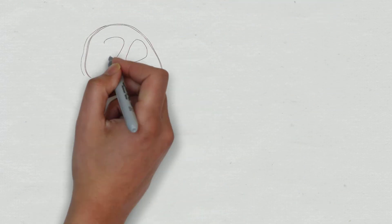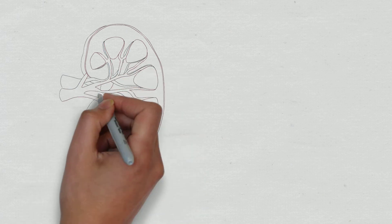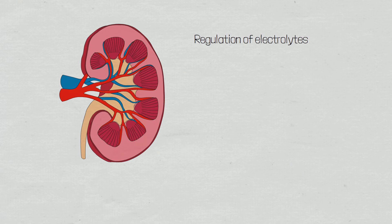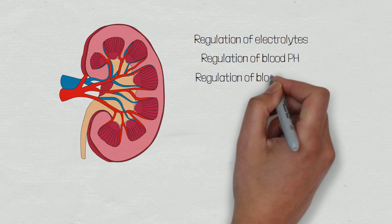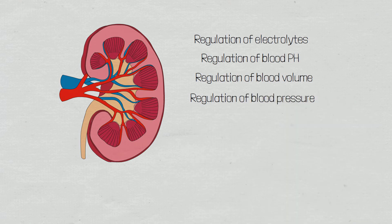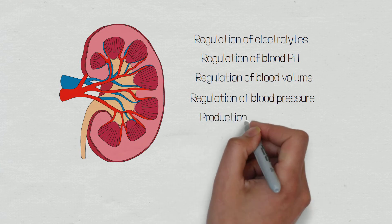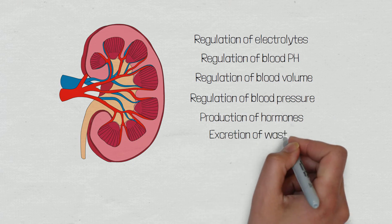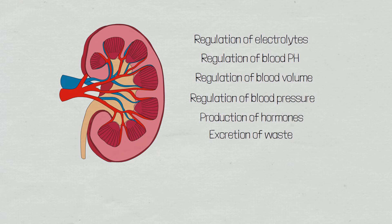The kidneys are responsible for several homeostatic processes. These include the regulation of blood electrolytes such as sodium and potassium; regulation of blood pH by excreting hydrogen ions in urine and absorbing bicarbonate; regulation of blood volume by conserving or eliminating water; regulation of blood pressure through the renin-angiotensin-aldosterone system; production of hormones such as vitamin D that promotes calcium absorption and erythropoietin that promotes erythrocyte production; and elimination of waste products such as creatinine, urea, ammonia, and metabolised drugs.